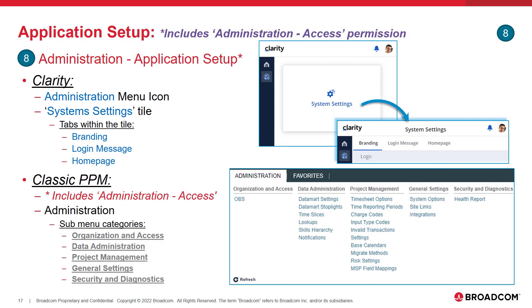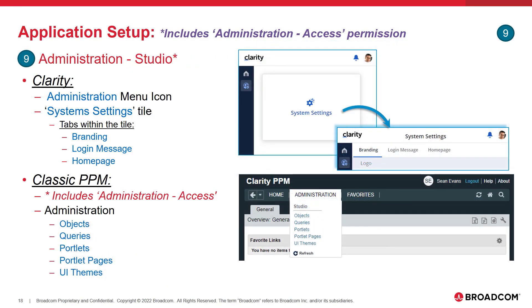The administration application setup right includes the administration access permission, which allows the user to access Clarity's administration menu and to manage the system settings. The administration studio right also includes the administration access permission, allowing the user to access Clarity's administration menu and manage system settings. From within Classic PPM, the studio right provides administration permissions to set up studio objects and classic portlets, portlet pages, and themes within the product.